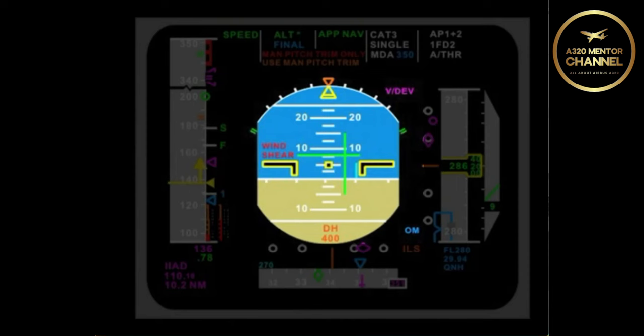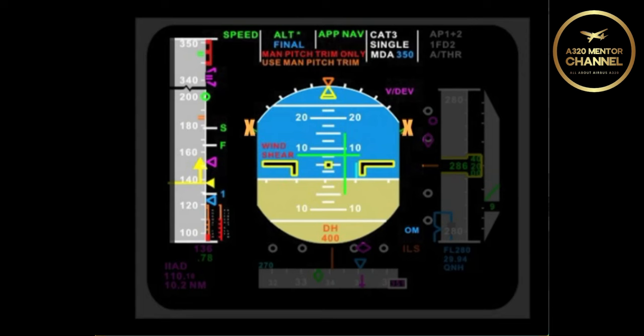What would be some specific indications that you are in degraded flight control law or even alternate law? The easiest way to determine that you are out of normal law is by looking for amber X's that will have replaced the normal law green tick marks at 67 degrees on the PFD.